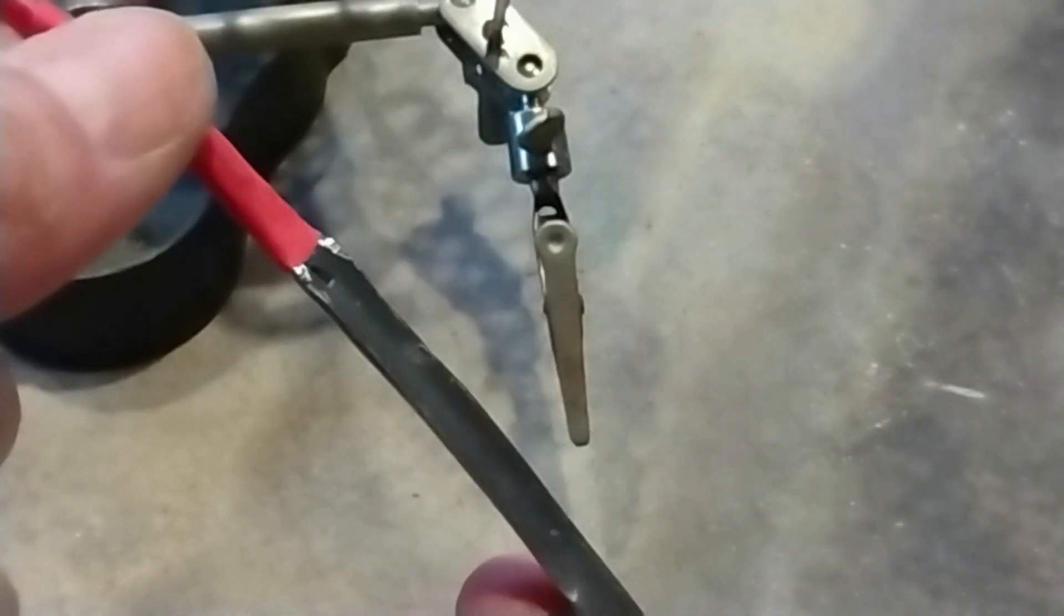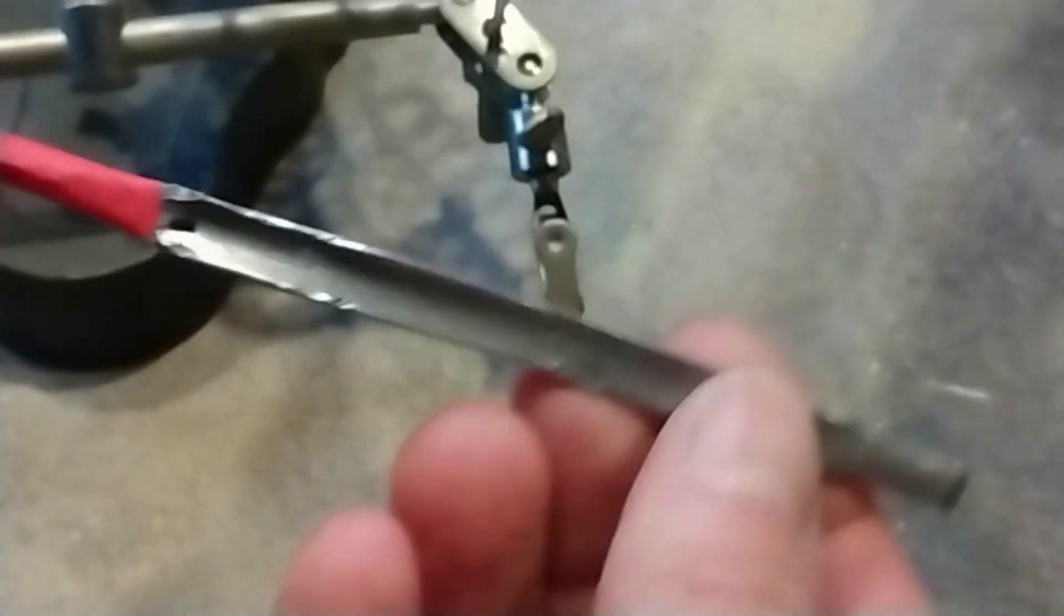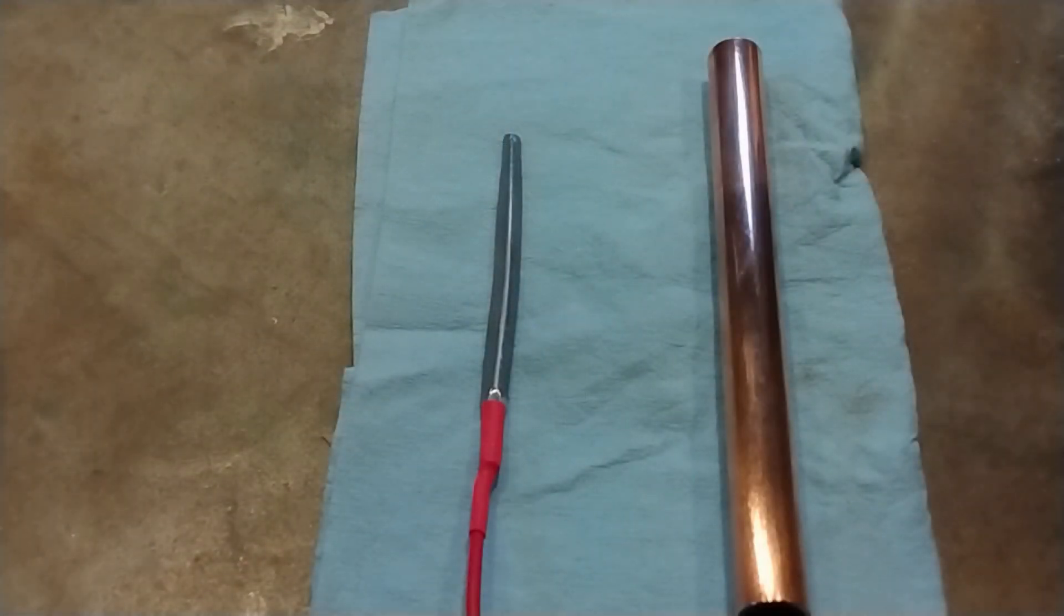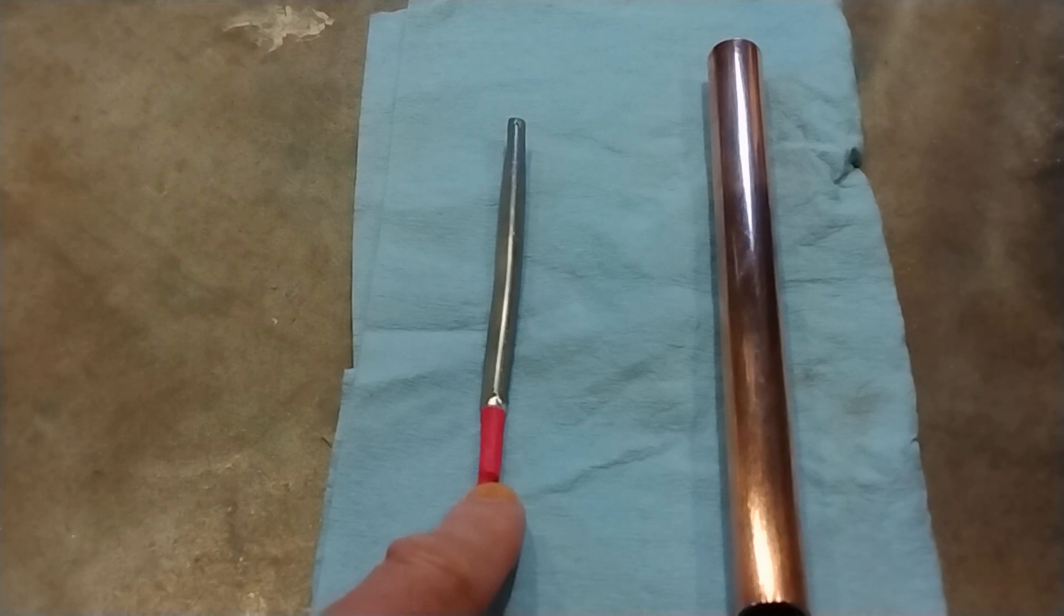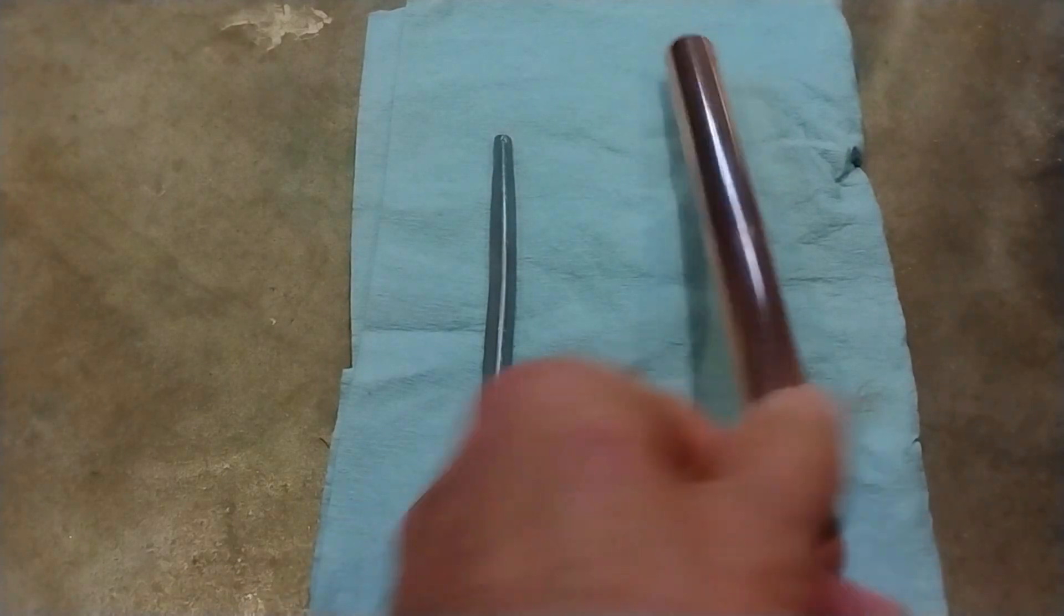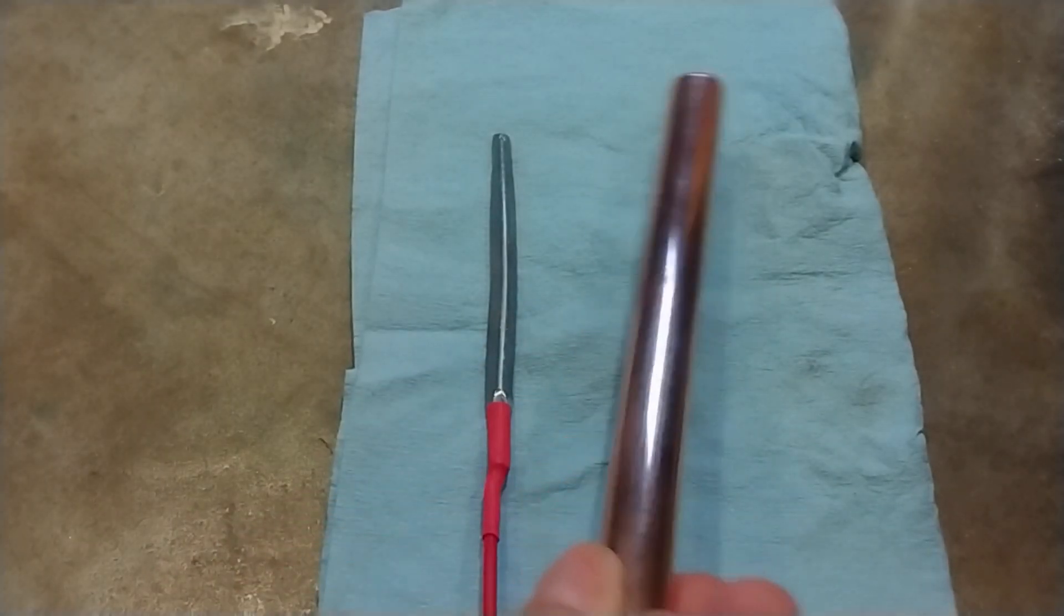And now we want to turn it into a lead dioxide electrode. So let me show you how to achieve this. Now, in order to turn this lead electrode into a lead dioxide electrode, you will need a copper electrode. This is just some standard tubing.